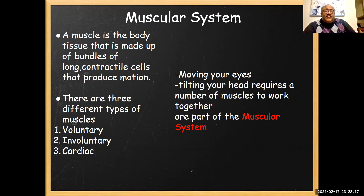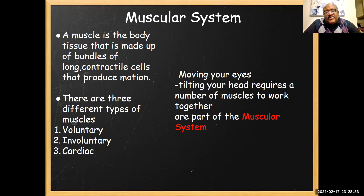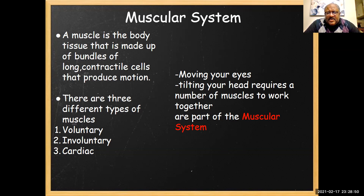There are three different types of muscles we're going to discuss: voluntary, involuntary, and cardiac. Cardiac also kind of falls under the involuntary framework, but it's separate because there are certain characteristics that only apply to cardiac muscle — your heart is the only muscle that can never rest. The muscular system is involved with things you don't even think about, like moving your eyes, tilting your head, or frowning. I think frowning takes something like 72 muscles.